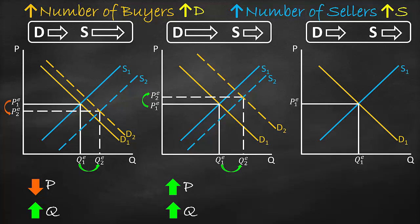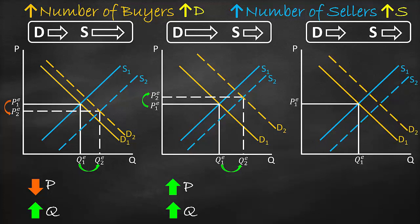In the third graph, we shift both the supply curve and the demand curve to the right with an equal shift, labeling them S2 and D2. The intersection of S2 and D2 is the new equilibrium point, giving new equilibrium price P2 and quantity Q2. We notice price remains constant — P1 is the same as P2 — and quantity increased from Q1 to Q2. To summarize: price remains constant and quantity increases.